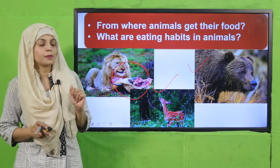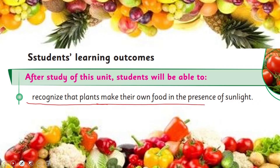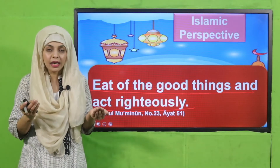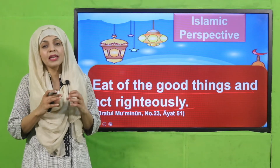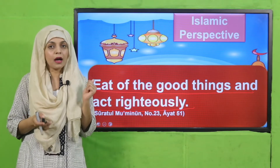In today's lecture, students will be able to recognize that plants make their own food in the presence of sunlight, and they will also recognize the eating behaviors of animals. From the Islamic perspective: eat of the good things and act righteously. Allah has given us many things to eat for energy, but we should always choose better food — better meaning what is good for your body and health — and always choose halal things.